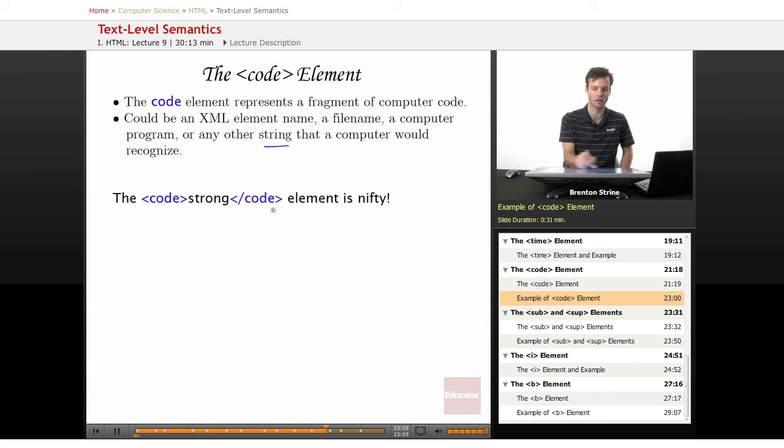And so here's a little example. Strong is a tag we talked about a bit earlier. And if we didn't mark it out as code, you might be a little bit confused about what this sentence is saying. The strong element, why is this element strong and what are the weak elements, right? That's confusing, but because it's marked as code, it's clear that it's, oh, the element, the actual computer code element strong is nifty.